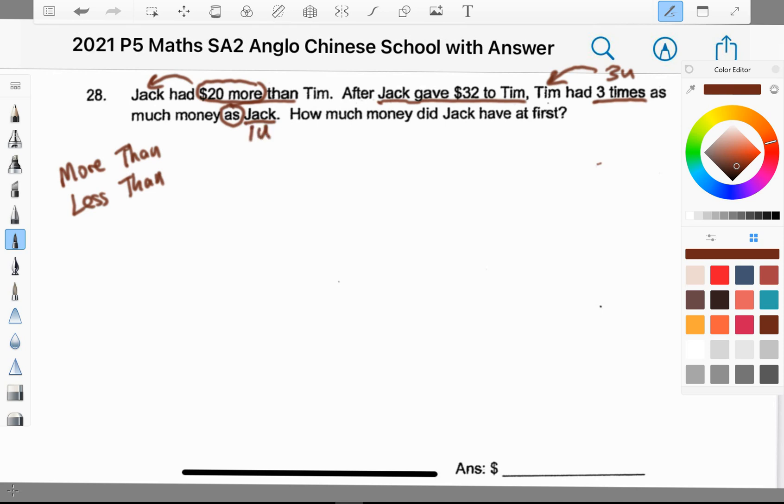After giving us the back story, they want us to find how much money did Jack have at first. We are almost done with the annotation. There are many children in Singapore who dive straight into the problem sum. We don't advise students to do that because they do not have a complete understanding of the problem sum itself. To enhance the problem solving process and understanding, I get my students to use the highlighter as well.